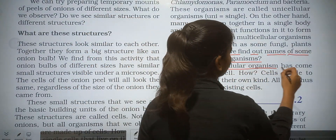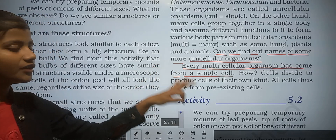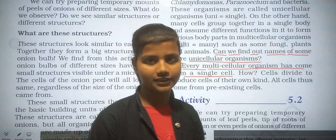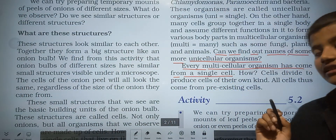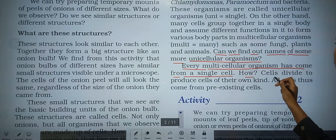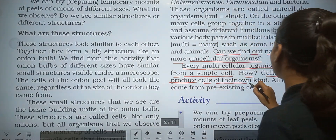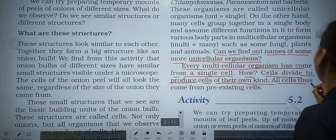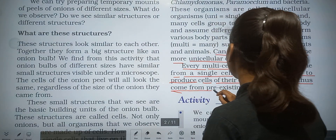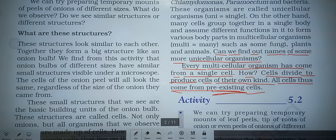Every multicellular organism has come from a single cell — they started their life from a single cell. Cells divide to produce cells of their own kind; all cells arise from pre-existing cells.